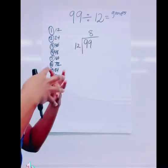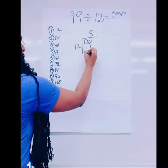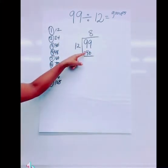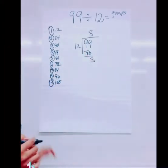I can pull out 8 whole groups of 12 from this and this is what I'm doing now. I'm pulling out 8 whole groups. If I did that, I would pull out 96. Subtract it, I would have 3 left over.